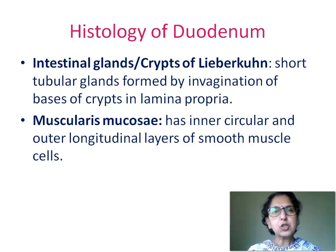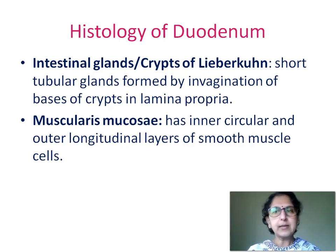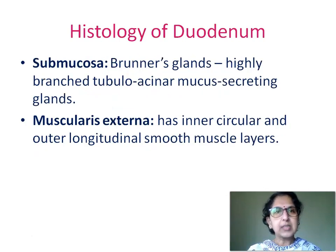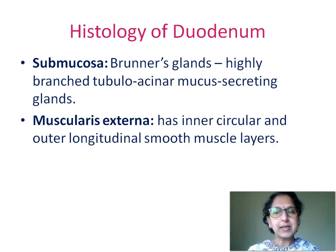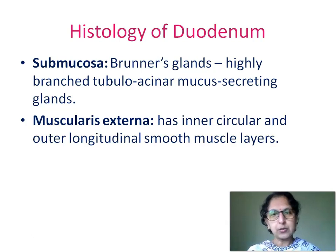We also saw the intestinal glands or crypts of Lieberkühn — short tubular glands formed by invagination of the bases of crypts in the lamina propria. Muscularis mucosae showed two layers: inner circular and outer longitudinal layers of smooth muscle cells. Submucosa showed the characteristic feature, i.e., Brunner's glands — highly branched tubular acinar mucous-secreting glands. Muscularis externa showed inner circular and outer longitudinally arranged smooth muscle layers.